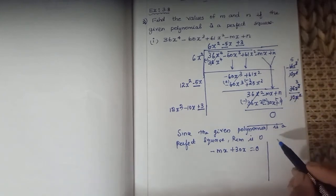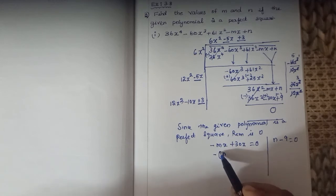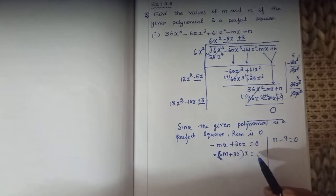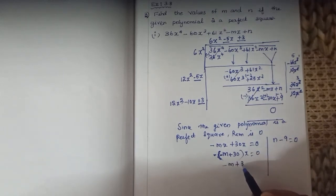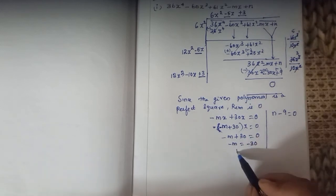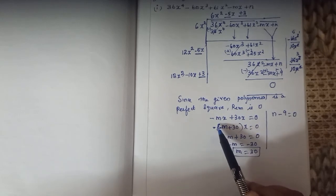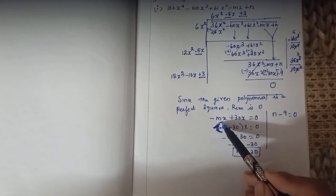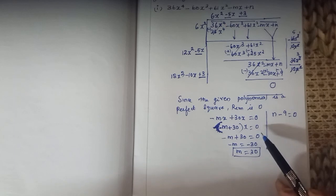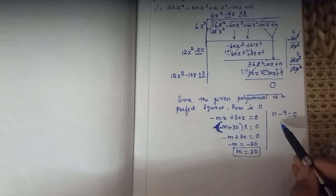After cancellation, the x term gives: minus m plus 30 times x equals 0. Dividing by x, minus m plus 30 equals 0, so minus m equals minus 30, therefore m equals 30.